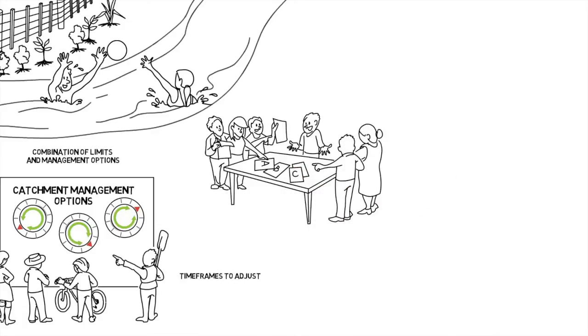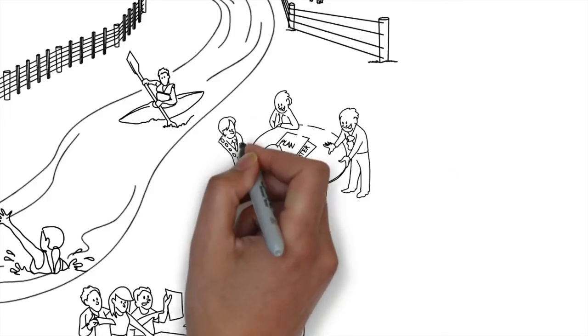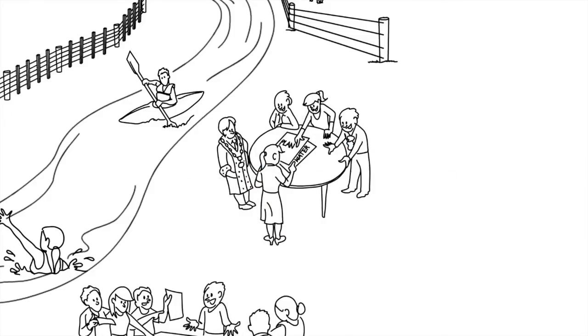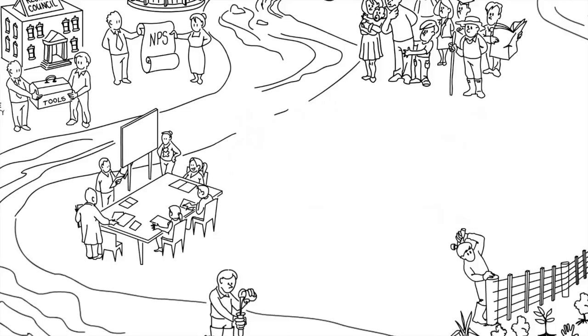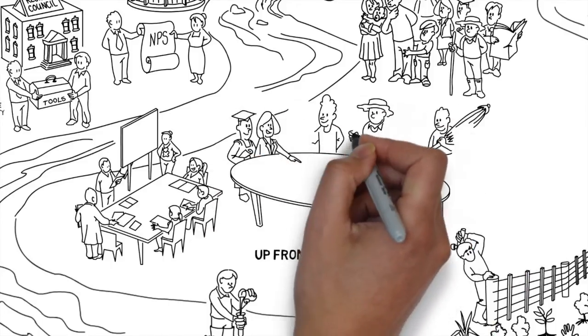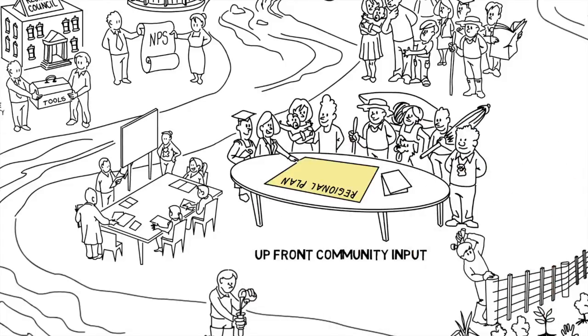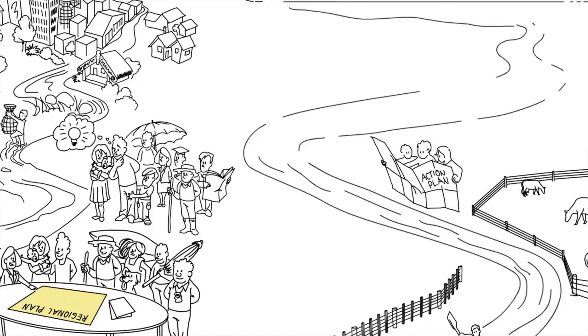Once you've looked at the different scenarios and considered the trade-offs, councils can make decisions and write them into their regional plans. The government believes working together up front on freshwater planning will mean less arguing down the track. If resource users and the people living by the freshwater resource have input into the plan, they'll be more likely to understand and accept it. This means decisions and plans are less likely to face appeals in the Environment Court.